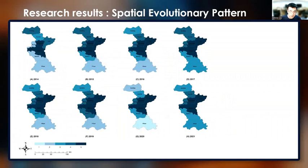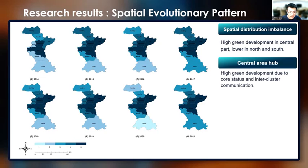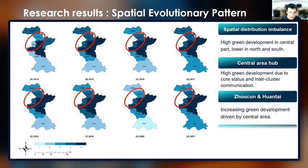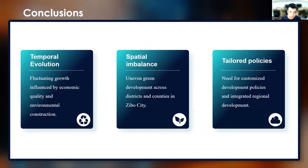In terms of spatial distribution, the level of green development in Zibo City exhibits an imbalance, with high levels in the central part and lower levels in the northern and southern parts. This is primarily due to the relative independence among the clusters in the cluster-type city. At the core hub of Zibo City, the central area exhibits a higher level. Zhoucun and Huantai, driven by the central area, demonstrate an increasing level of green development. On the other hand, Boshan and Yiyuan, located in the southern region with a fragile environment, show fluctuations between medium and low green development levels, due to geographical barriers and a decrease in effect from the central area.